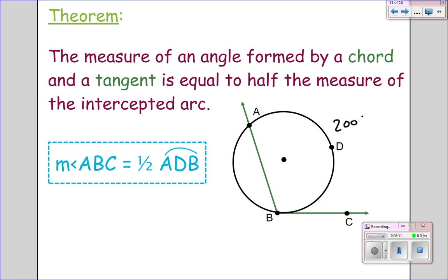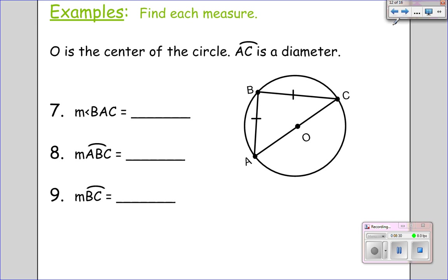So if this arc was 200 degrees, it goes from here to here, that angle would be 100 degrees. So make sure that you get those three theorems down and go at the inscribed angles about the quadrilateral, the tangent, and the semicircle. And let's try one problem here and see how we do.